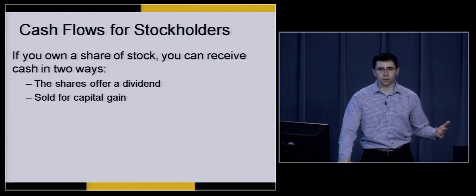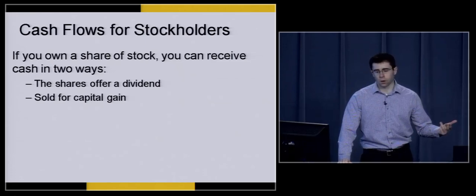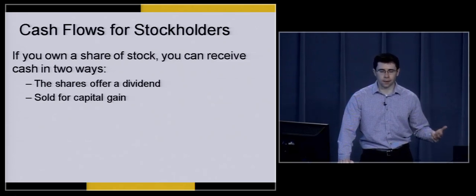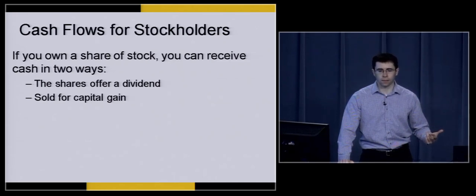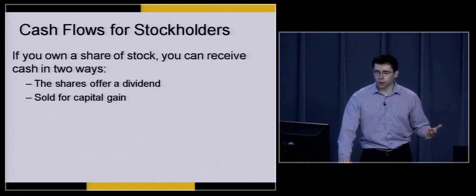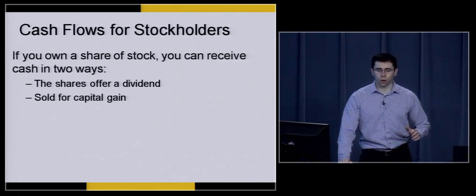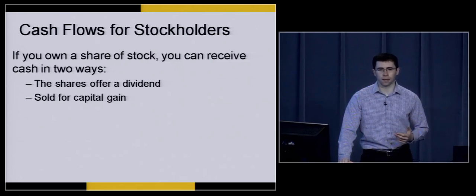Most stocks in the United States do not actually pay dividends — tech companies are most likely not going to pay a dividend. The exceptions are usually companies like Apple, or very large tech companies that have very positive net income and very large cash flows. There are companies out there, however, like Ford, GE, or GM — most of the blue chip companies — that will typically pay a quarterly dividend.